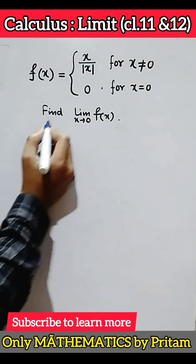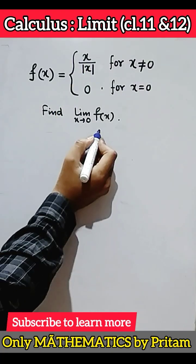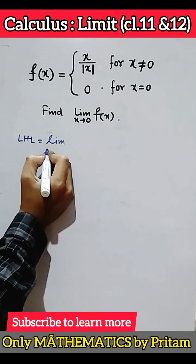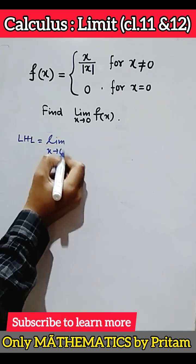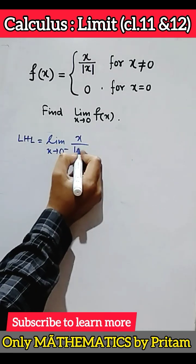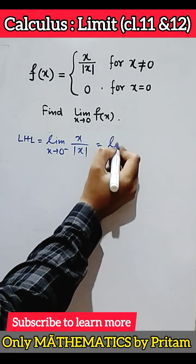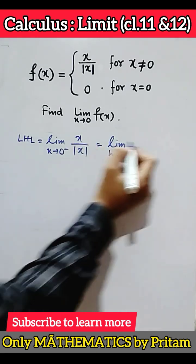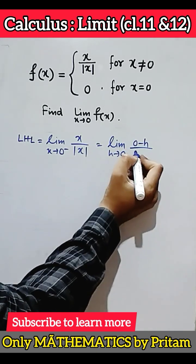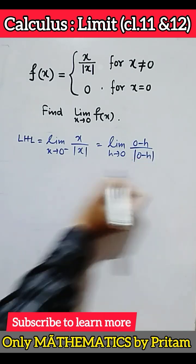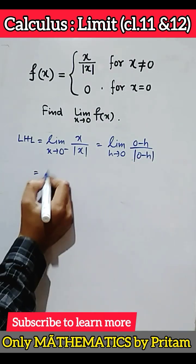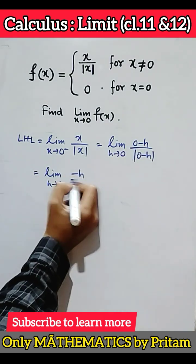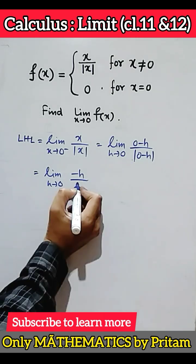f(x) is given; we have to find the limit as x tends to 0 of f(x). First, the left-hand limit: limit x tends to 0 minus of x by mod x. Substituting, limit h tends to 0 with x = 0 minus h. This gives limit h tends to 0 of minus h divided by mod of minus h, which equals minus h over h.